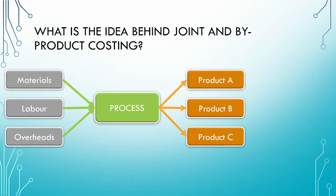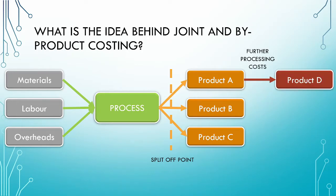For joint processes, we cannot distinguish between the different products until a specific point known as the split-off point. Before the split-off point we cannot trace the costs to the individual products, and therefore we need various methods to allocate the joint costs to the joint products. After the split-off point, where products are separately identifiable, they may be subject to further processing, and those processing costs can be traced to the individual products.